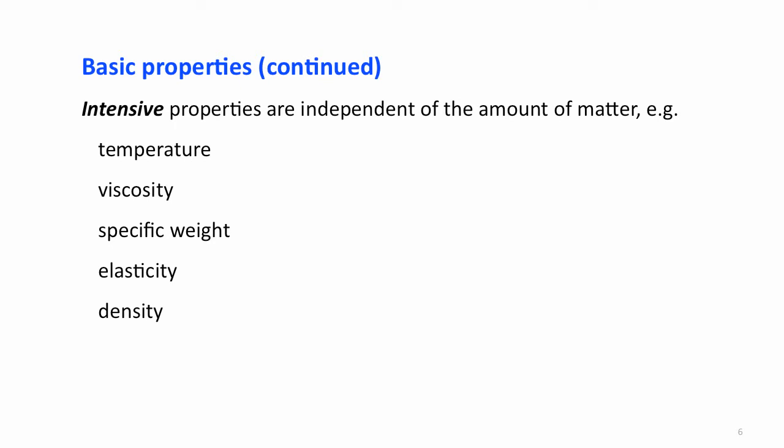Density is simply the mass divided by the volume. Or another way to think of it is it's the ratio of two different extensive properties and it becomes an intensive property through that. So many extensive properties can be made intensive by dividing by the mass or sometimes by the volume.